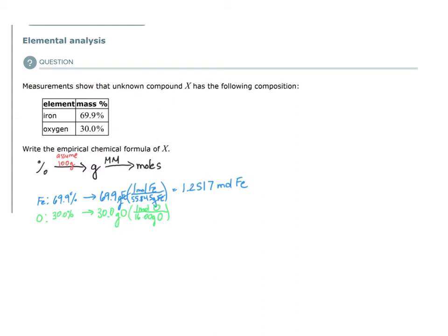How many moles of oxygen do we have in this 100 grams of sample? 1.875 moles of oxygen. Assuming we have 100 grams of sample, that would be 69.9 grams of iron and 30 grams of oxygen, this many moles of iron, this many moles of oxygen.